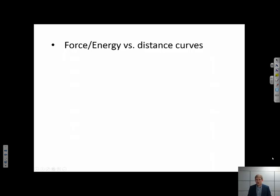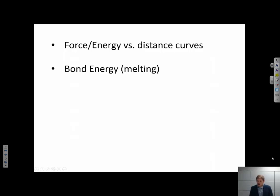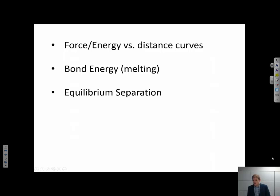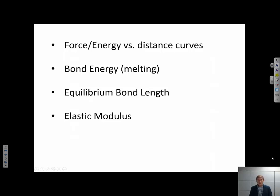To summarize: we covered interatomic force and energy versus distance curves — don't mix them up. For the energy curve, the equilibrium position is at the minimum; for the force curve, equilibrium at zero Kelvin is where force equals zero. The depth of the interatomic potential well represents bond energy — enough kinetic energy to overcome it melts the material. The equilibrium separation R-naught is where potential energy is minimized at zero Kelvin. Finally, the slope of the force-distance curve at equilibrium is proportional to the elastic modulus of the material.